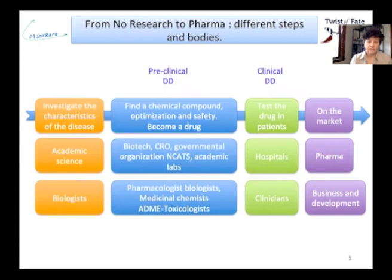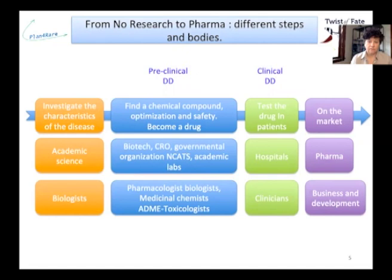Where are the different steps performed and by whom? Research is executed in scientific academic centers — mainly universities and NIH — and is focused on the biological characteristics of the disease, performed by biologists. Pre-clinical studies are performed in biotechs, pharmaceutical companies, CROs, or specialized governmental organizations such as NCATS, and sometimes in academic labs. Successful pre-clinical studies require pharmacologists, biologists specialized in pharmacology, medicinal chemists, and toxicologists working together. The clinical phases are performed in hospitals by clinicians, and the drug is brought to market by a pharmaceutical company.